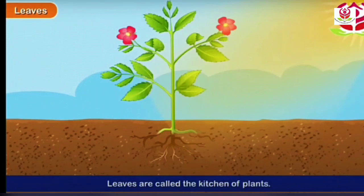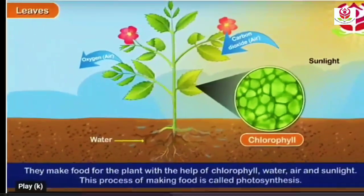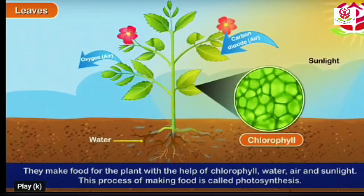Next are leaves. Leaves are also called the kitchen of plants, as they make food for the plants with the help of chlorophyll, water, air — that is oxygen and carbon dioxide — and sunlight. This process of making food with the help of air, water, chlorophyll, and sunlight is called photosynthesis.